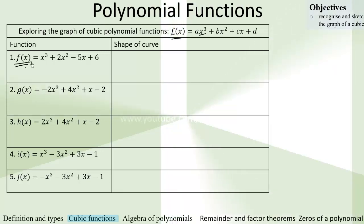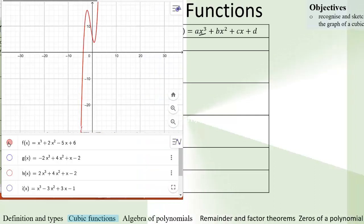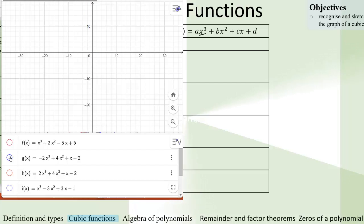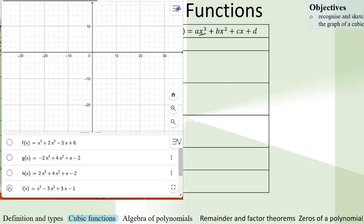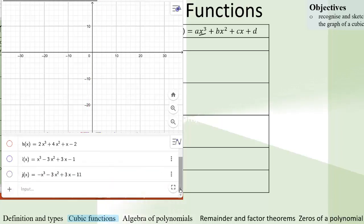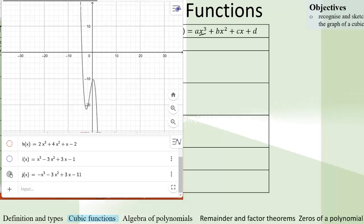Let's plot it on GeoGebra Graphic Calculator so you can see the shape. When you plot g of x, you see the shape. When you plot h of x, you see the shape. I of x, the shape. J of x, the shape.